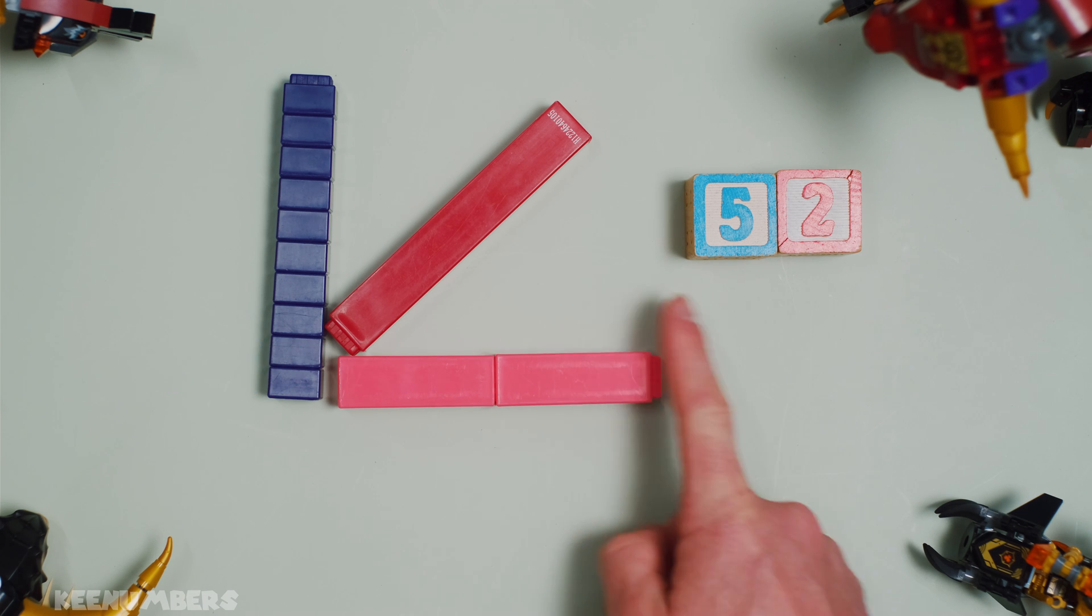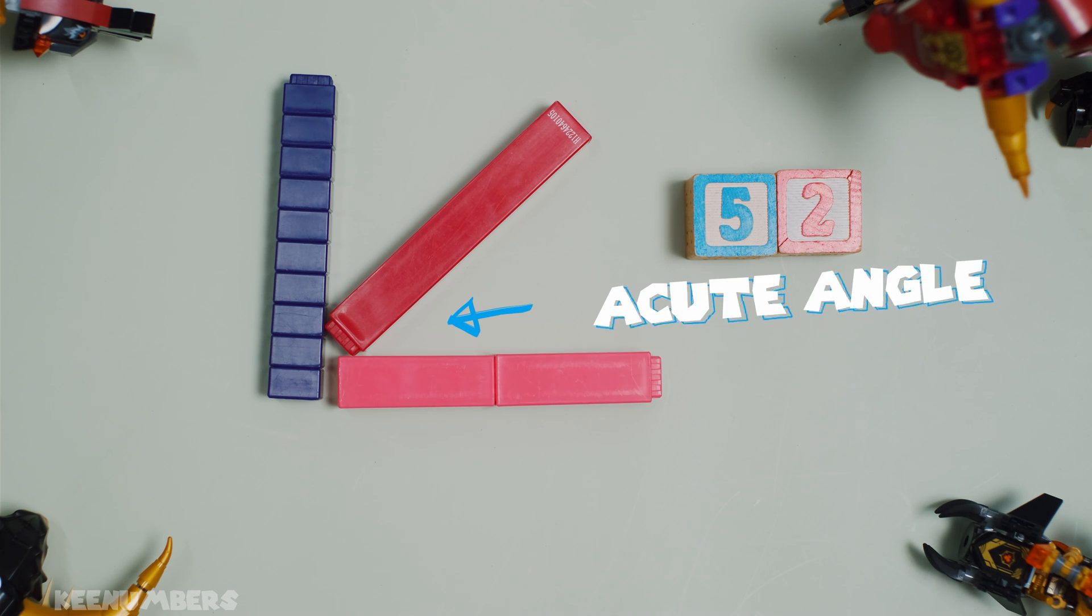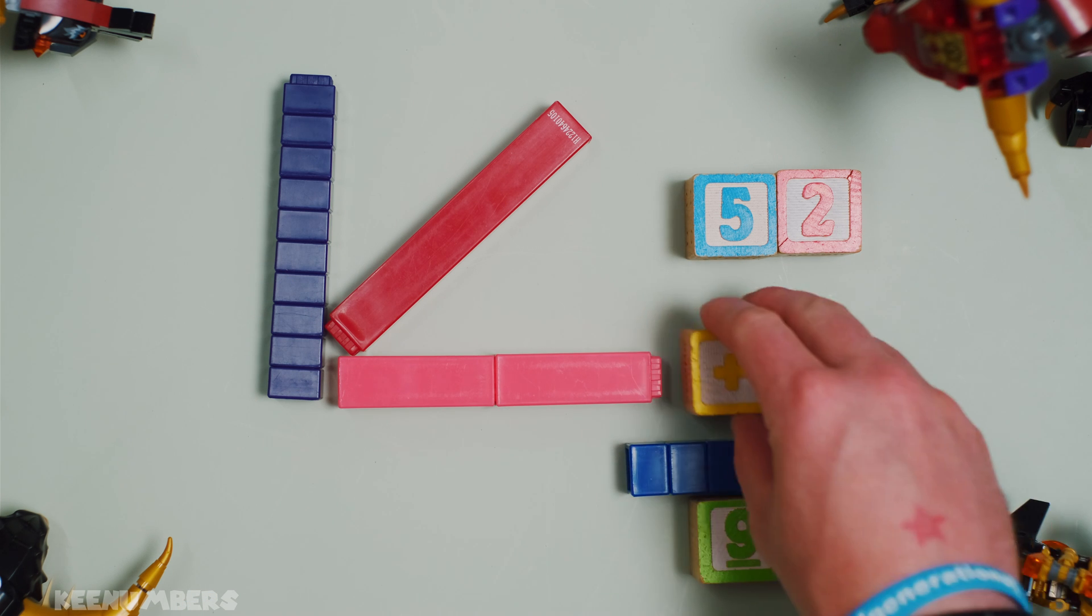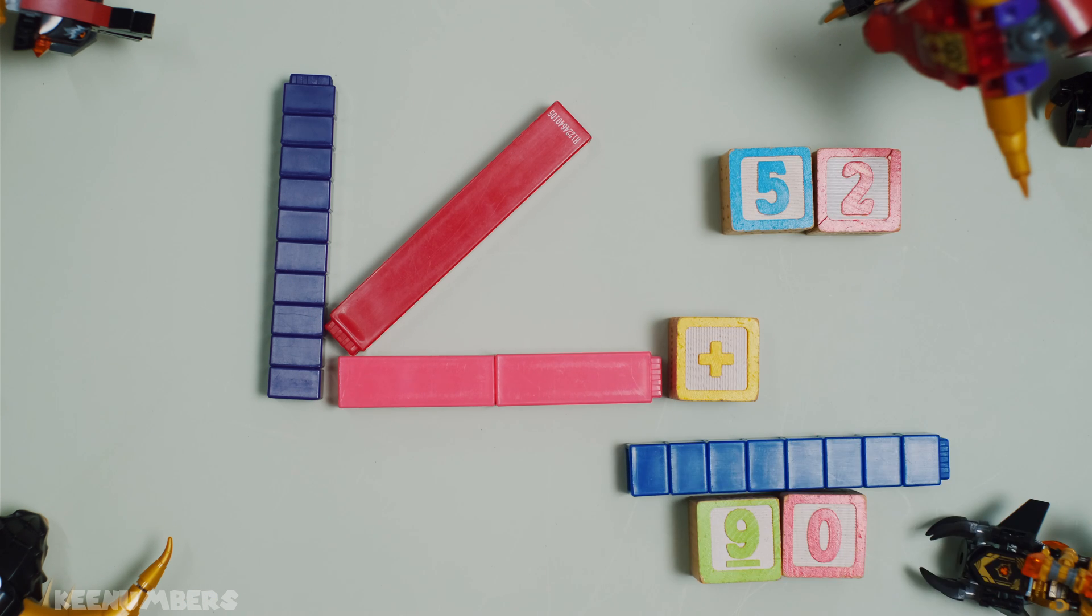We have this acute angle between 0 and 90. That's what makes it acute. We want to figure out what is this angle over here. In other words, what number when you add it to 52 gives you 90?